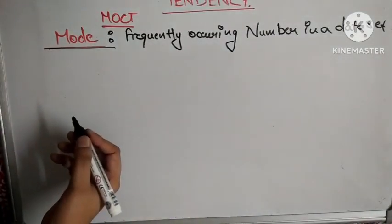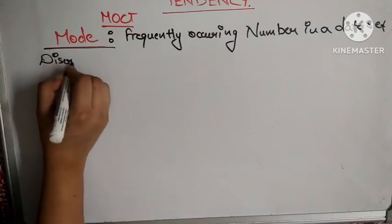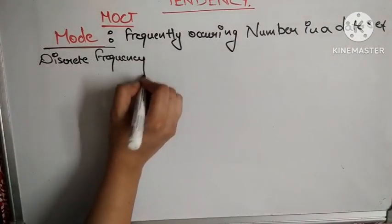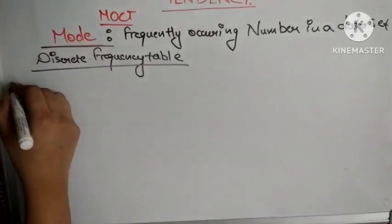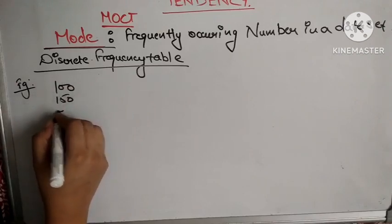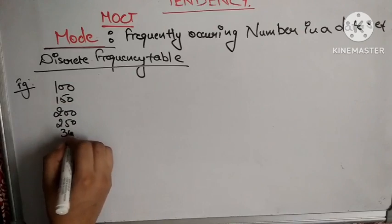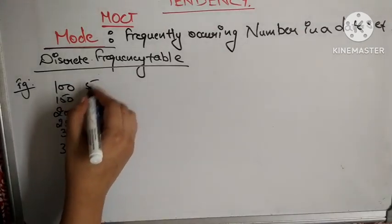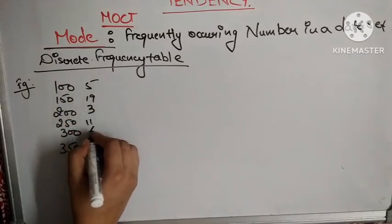Now let us see how we can calculate the mode when you have a discrete frequency table given to you. For the discrete frequency table, let us take an example with values 100, 150, 200, 250, 300, and 350, and the frequencies given are 5, 19, 3, 11, 6, and 9.